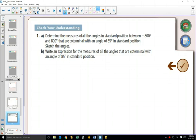Okay, wait for a second. Perfect. So, determine the measures of all the angles in standard position between -800° and 800° that are coterminal with an angle of 85° in standard position. So, one of our definitions here is coming up.